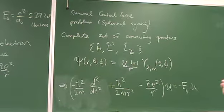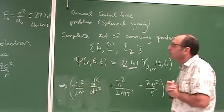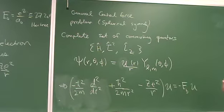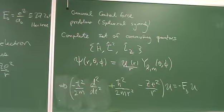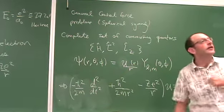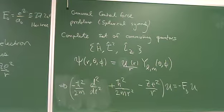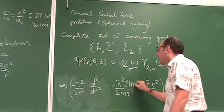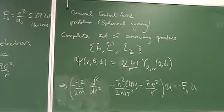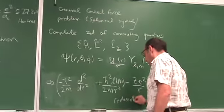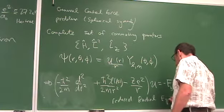In quantum mechanics, we can separate coordinates and express the eigenstates of the Hamiltonian in the position representation, separated into a radial wave function and a spherical harmonic. The radial wave function is conveniently written in terms of the reduced radial wave function with the factor 1/r explicitly factored out. When plugged into the 3D Schrödinger equation and separated, we get the familiar one-dimensional reduced radial equation.